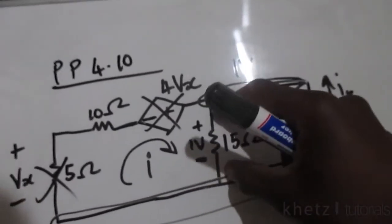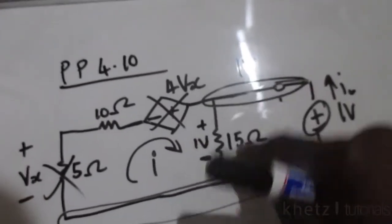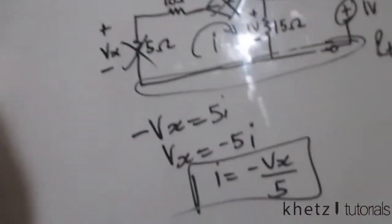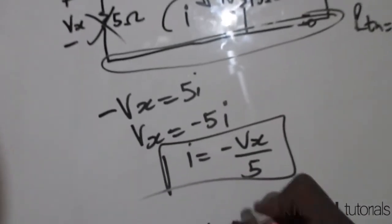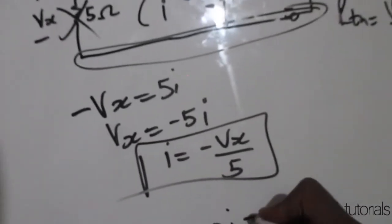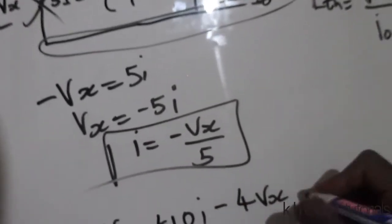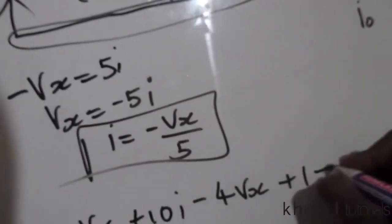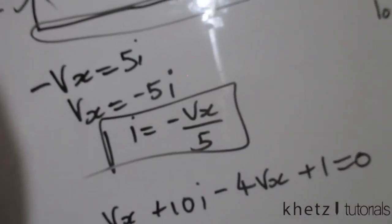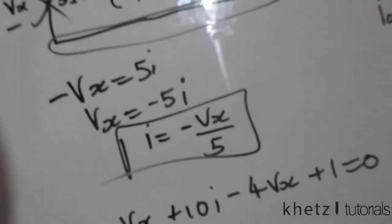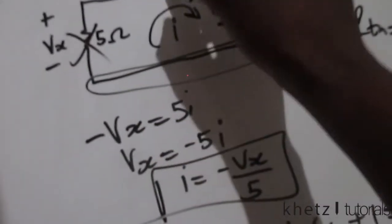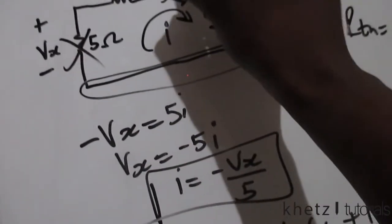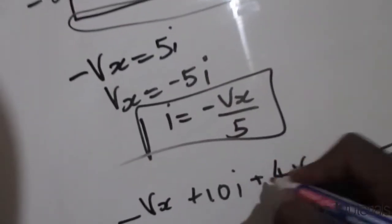Considering that the top node is 1 volt, and it is also across that 15-ohm resistor, going around this loop we say: negative vx plus 10i, negative 4vx, plus 1 equals 0. Note the polarity here is actually plus.